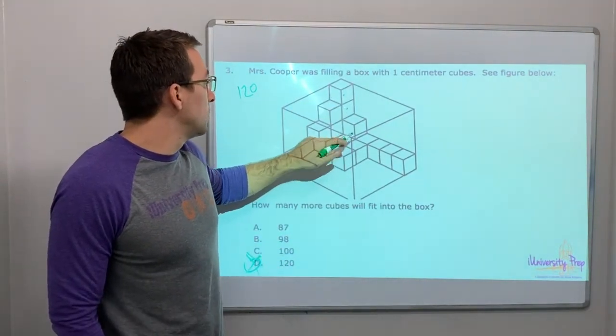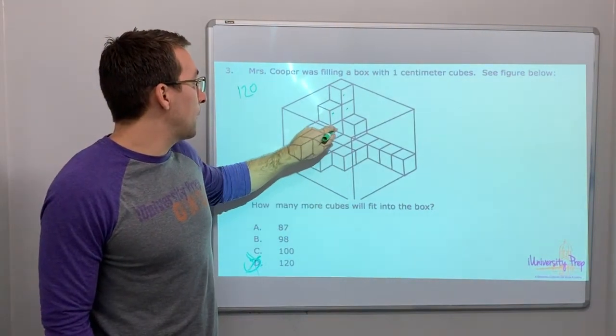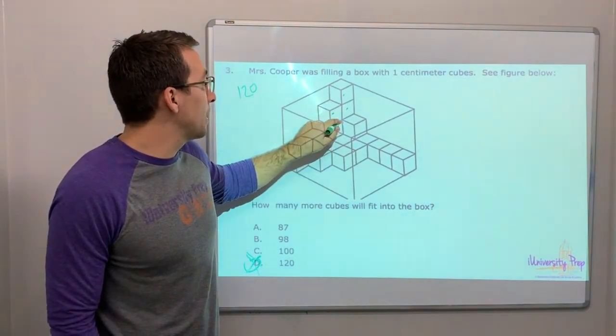One, two, three, okay? Four, five, and then there's a cube right here back behind it, right?